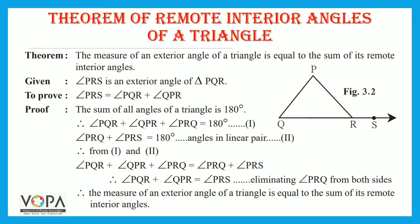Let's learn to prove the theorem of remote interior angles of a triangle. The statement of this theorem is: the measure of an exterior angle of a triangle is equal to the sum of its remote interior angles.